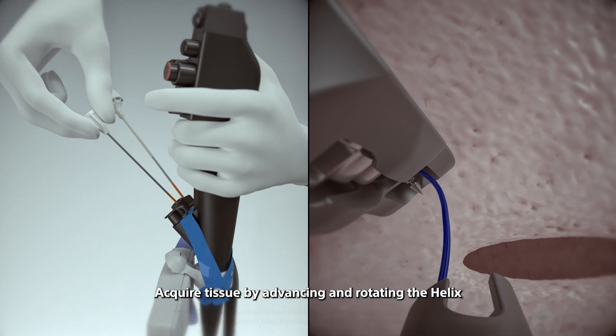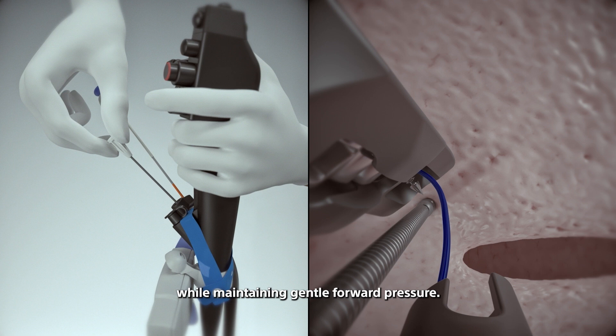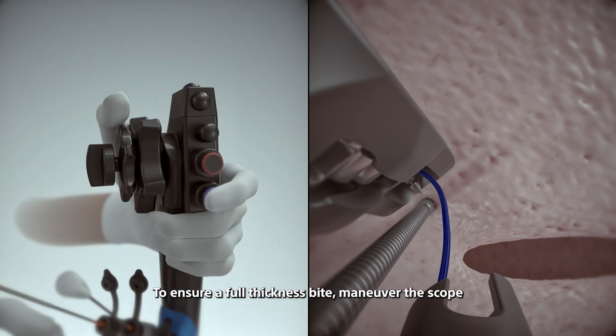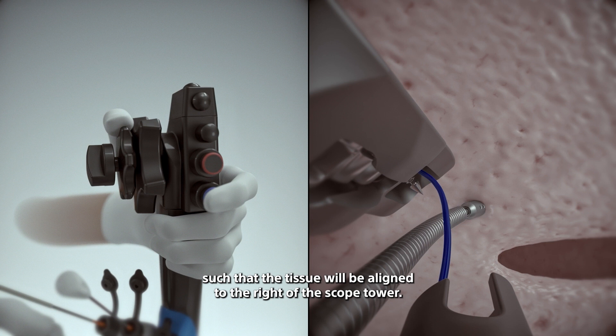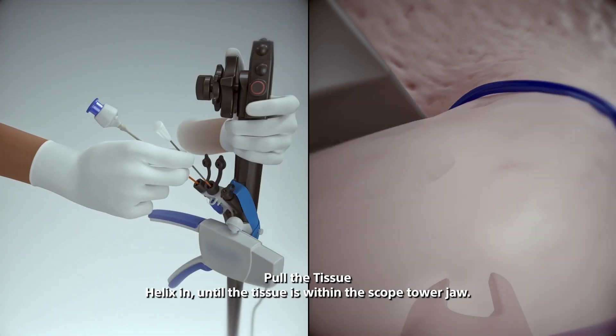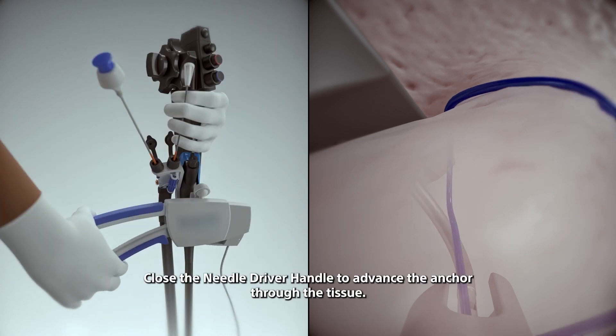Acquire tissue by advancing and rotating the helix catheter or handle clockwise until desired tissue depth is achieved while maintaining gentle forward pressure. To ensure a full thickness bite, maneuver the scope such that the tissue will be aligned to the right of the scope tower. Pull the tissue helix in until the tissue is within the scope tower jaw. Close the needle driver handle to advance the anchor through the tissue.